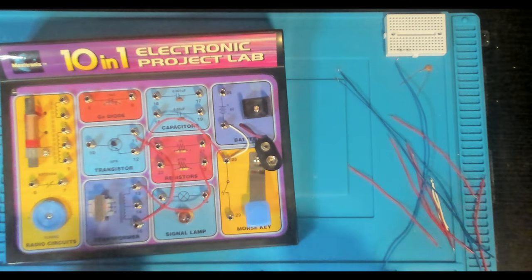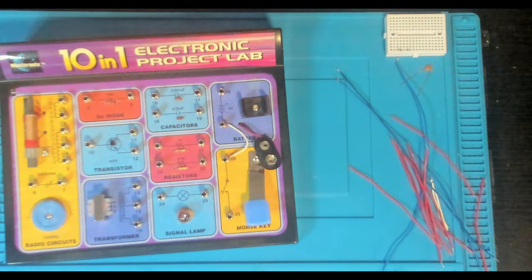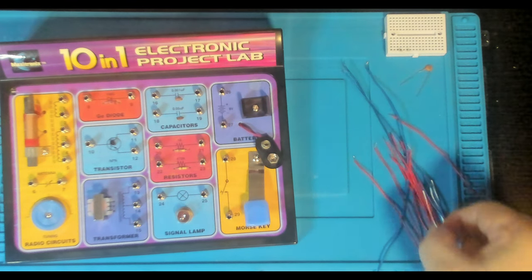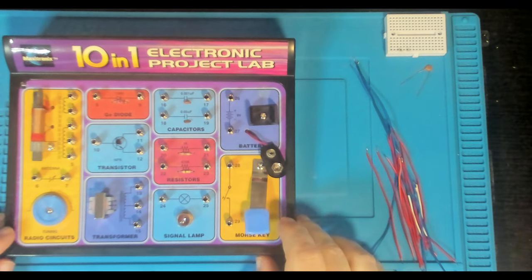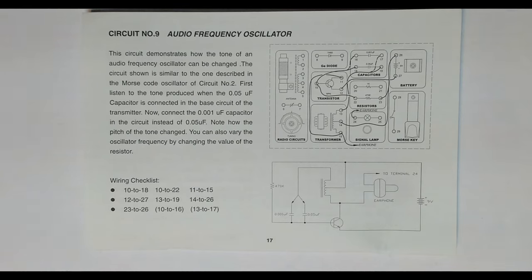This fills in from the earlier experiment which was the patrol car siren. It's a bit unfortunate that the output of these circuits is the headphone, because you don't get the full experience — you can't hear it. But at least we have the oscilloscope so we can actually see the output signal. This circuit demonstrates how the tone of an audio frequency oscillator can be changed. The circuit is similar to the Morse code oscillator of circuit number two. First, listen to the tone produced when the 0.05 microfarad capacitor is connected in the base circuit of the transistor. Then connect the 0.001 microfarad capacitor instead and note how the pitch changes. You can also vary the oscillator frequency by changing the value of the resistor.